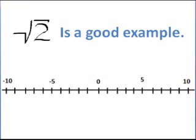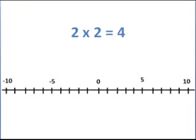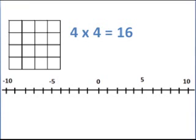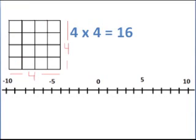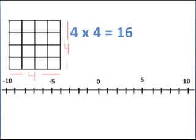Square root of 2 is another good example of an irrational number. But first, we'll take a quick look at what square roots are. 2 times 2 — any number times itself produces a product. In this case, 2 times 2 produces the product of 4. That makes 2 the square root of 4. 3 times 3 produces the product of 9 — that makes 3 the square root of 9. We have a square illustrated here with 16 different smaller squares. The length of each side of the large square is equal to the square root of 16, which is 4.